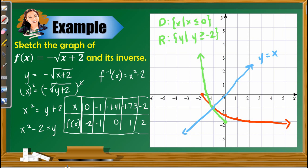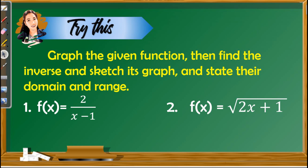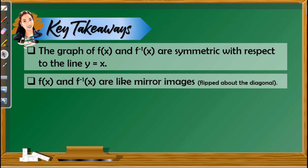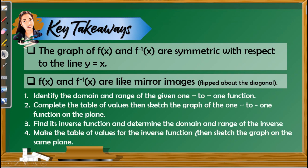Were you able to follow how to sketch the graph of a one-to-one function and its inverse? Now it's time to test your understanding. Do this activity: graph the given function, find the inverse and sketch its graph, then state their domain and range. You may pause the video to do this. You may use any graphing software to check your answers. For this lesson, remember: the graph of the function and its inverse are symmetric with respect to the line y = x, the identity function. f(x) and f⁻¹(x) are like mirror images, and you may follow the steps shown to sketch the graphs.